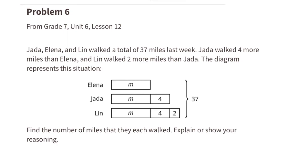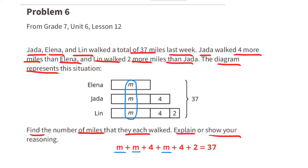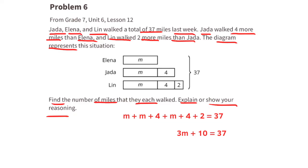Problem number six from 7th grade unit 6 lesson 12: Jada, Elena, and Lynn walked a total of 37 miles last week. Jada walked four more miles than Elena, and Lynn walked two more miles than Jada. The diagram represents this situation. The equation is: m plus (m plus 4) plus (m plus 4 plus 2) equals 37.